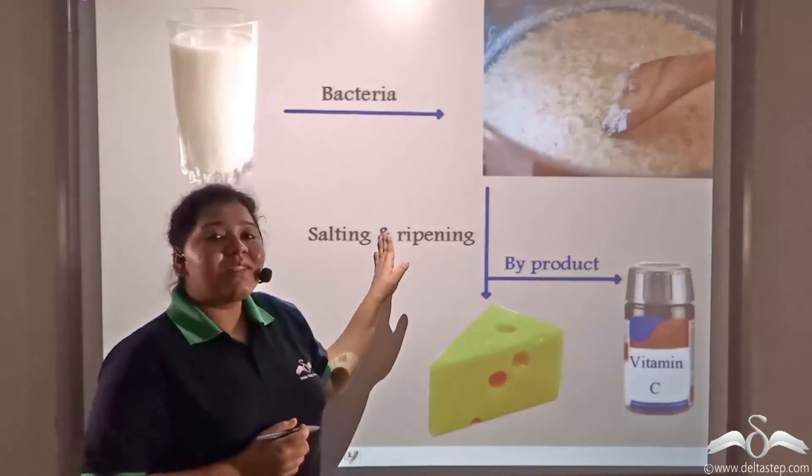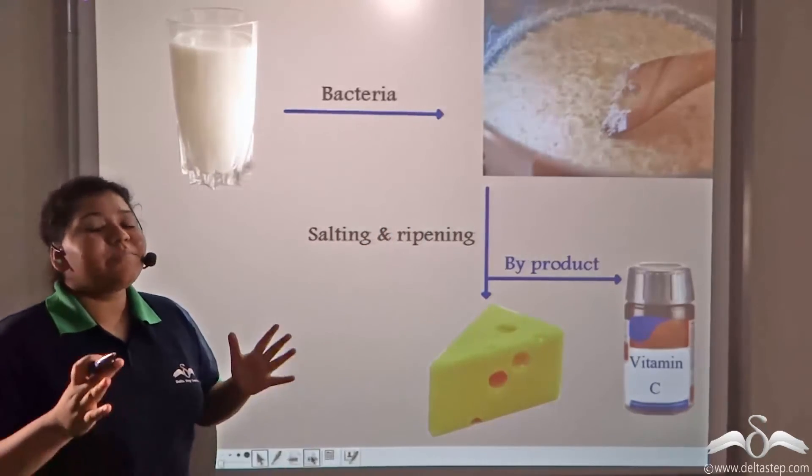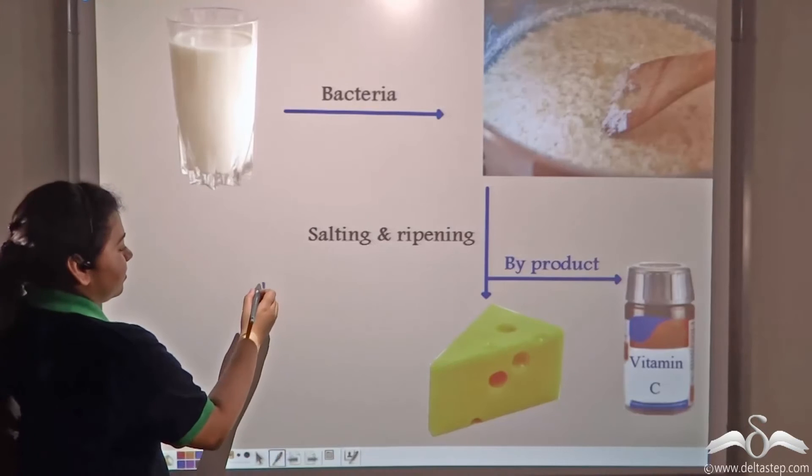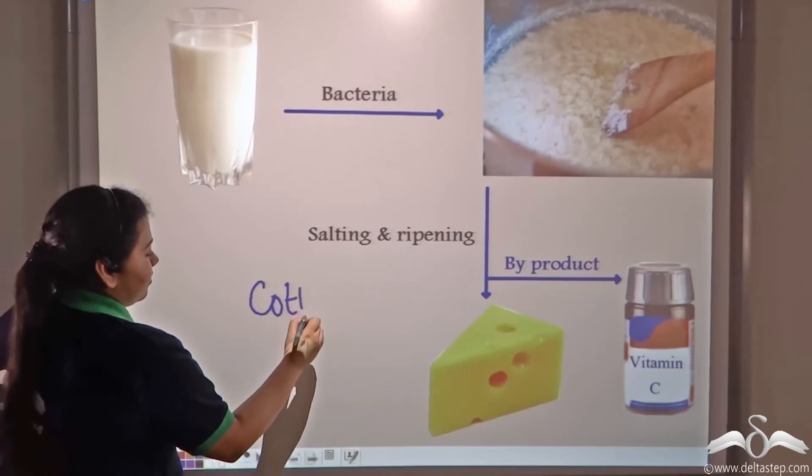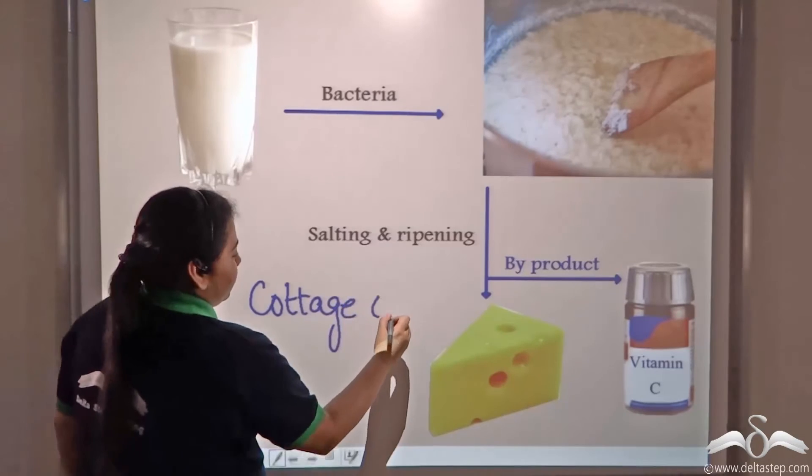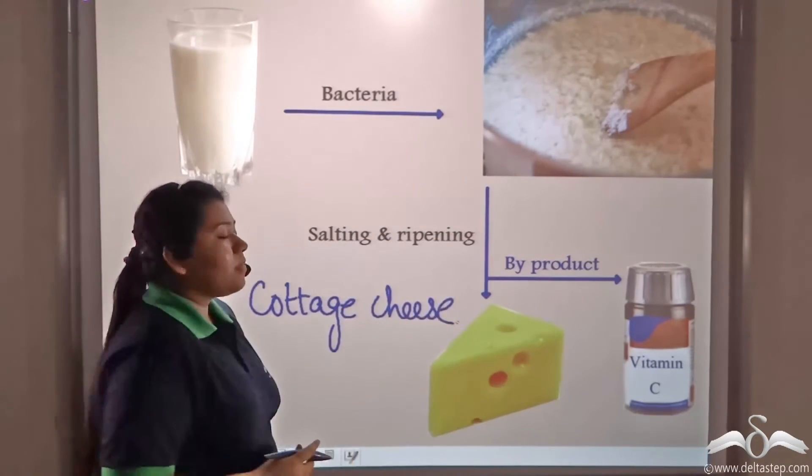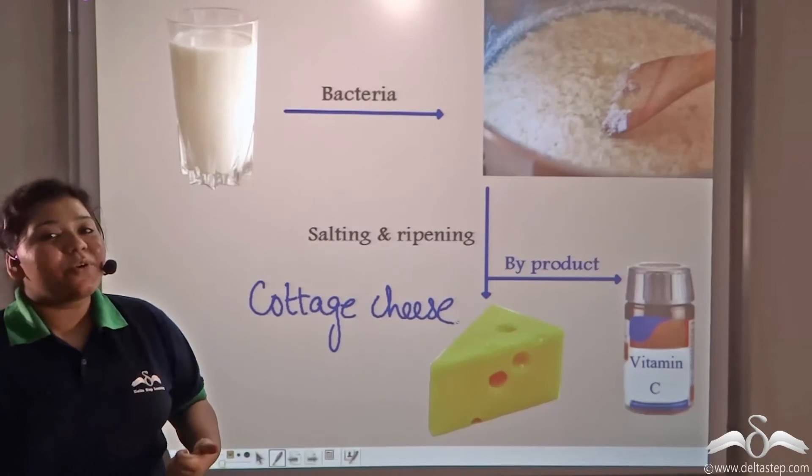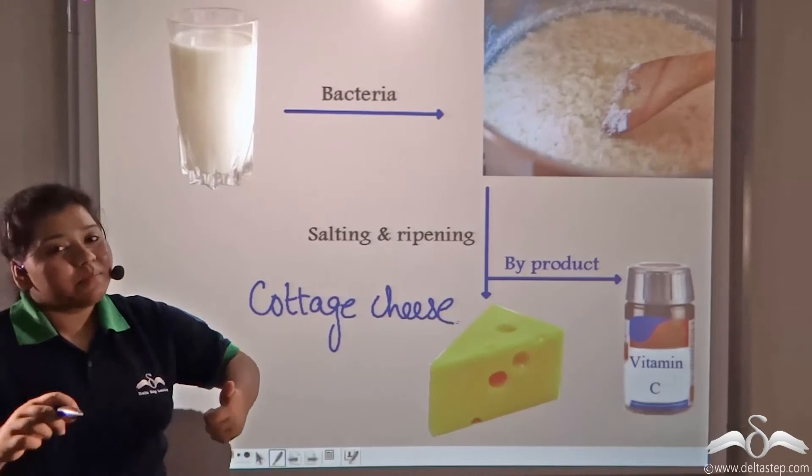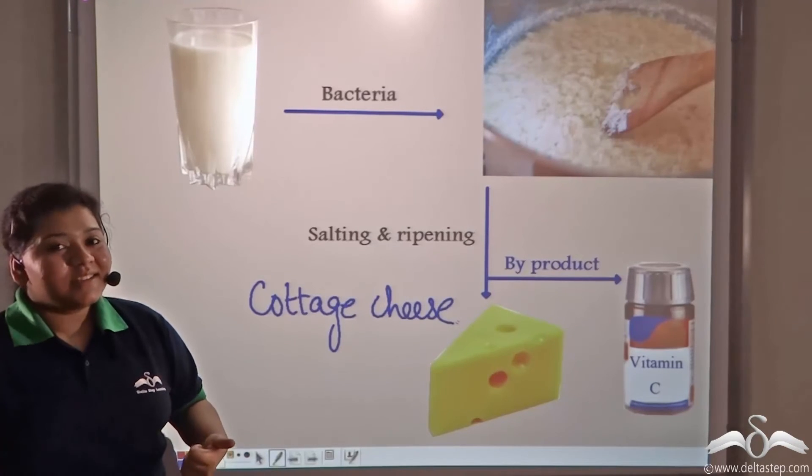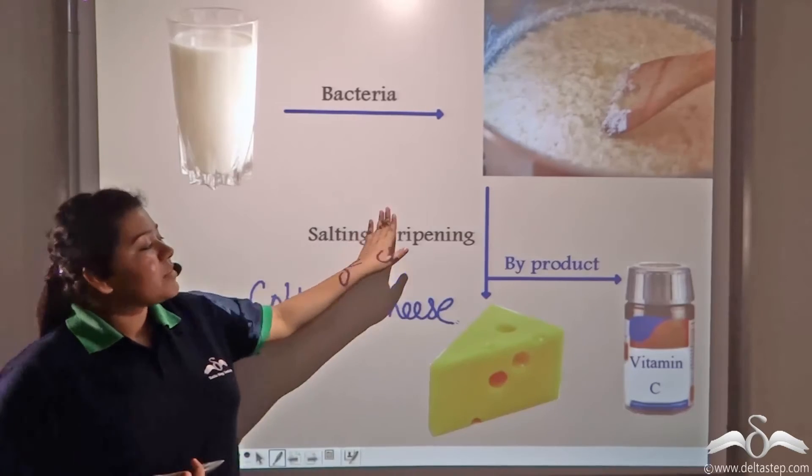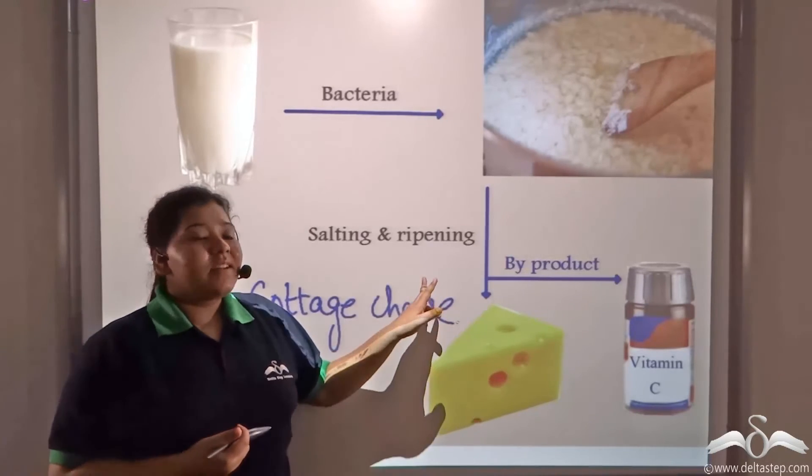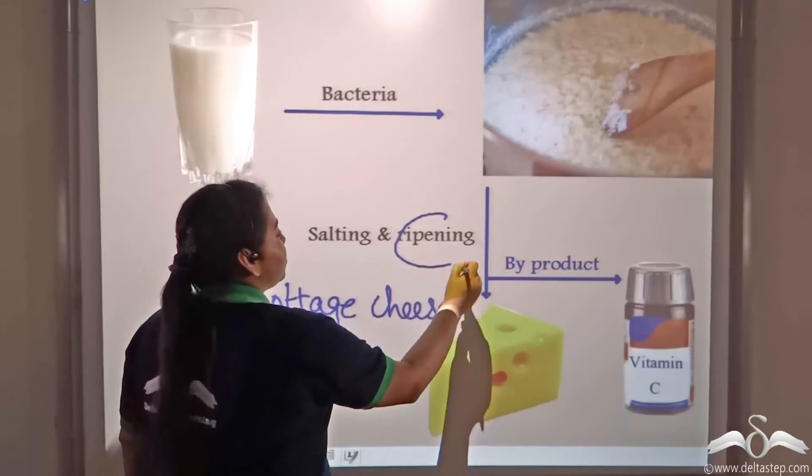After salting, the intermediate product that is formed is known as cottage cheese. To this intermediate product, different kinds of microorganisms such as fungus are added, and these fungi helps in ripening of the cottage cheese to form cheese. Ripening means to flavour.